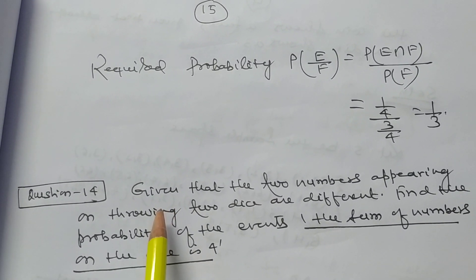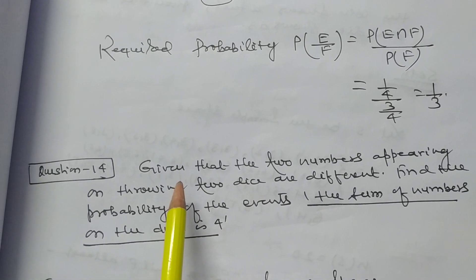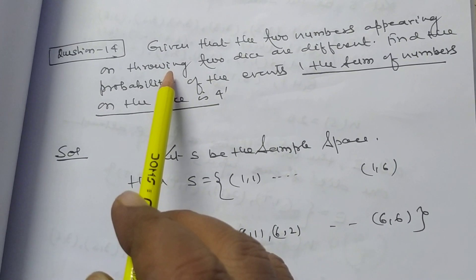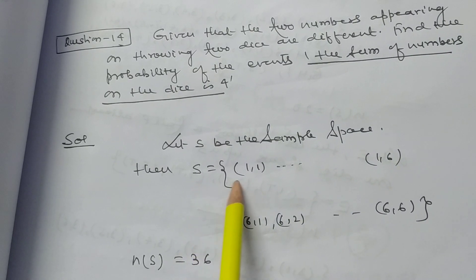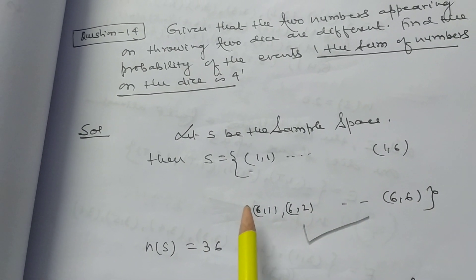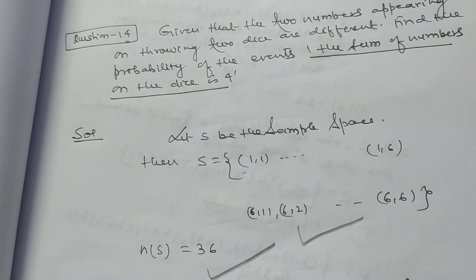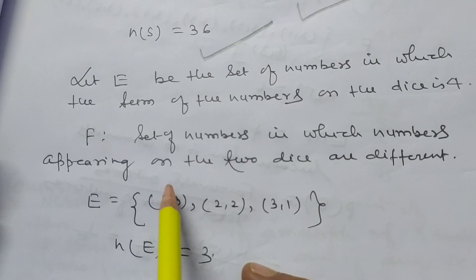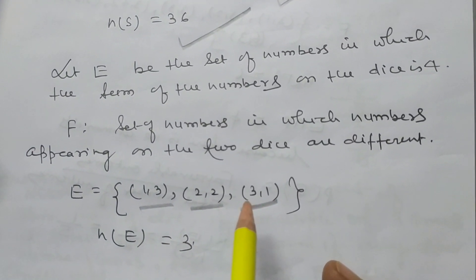In this way we can solve different types of problems based on combinations of die and coin problems. Let S be the sample space; there will be 36 elements: (1,1), (1,2), ..., (1,6), (2,1), ..., up to (6,6). The cardinal number of S is 36. Let E be the set of outcomes where the sum of the numbers on the dice is 4: E = {(1,3), (2,2), (3,1)}, so the cardinal number of E is 3.